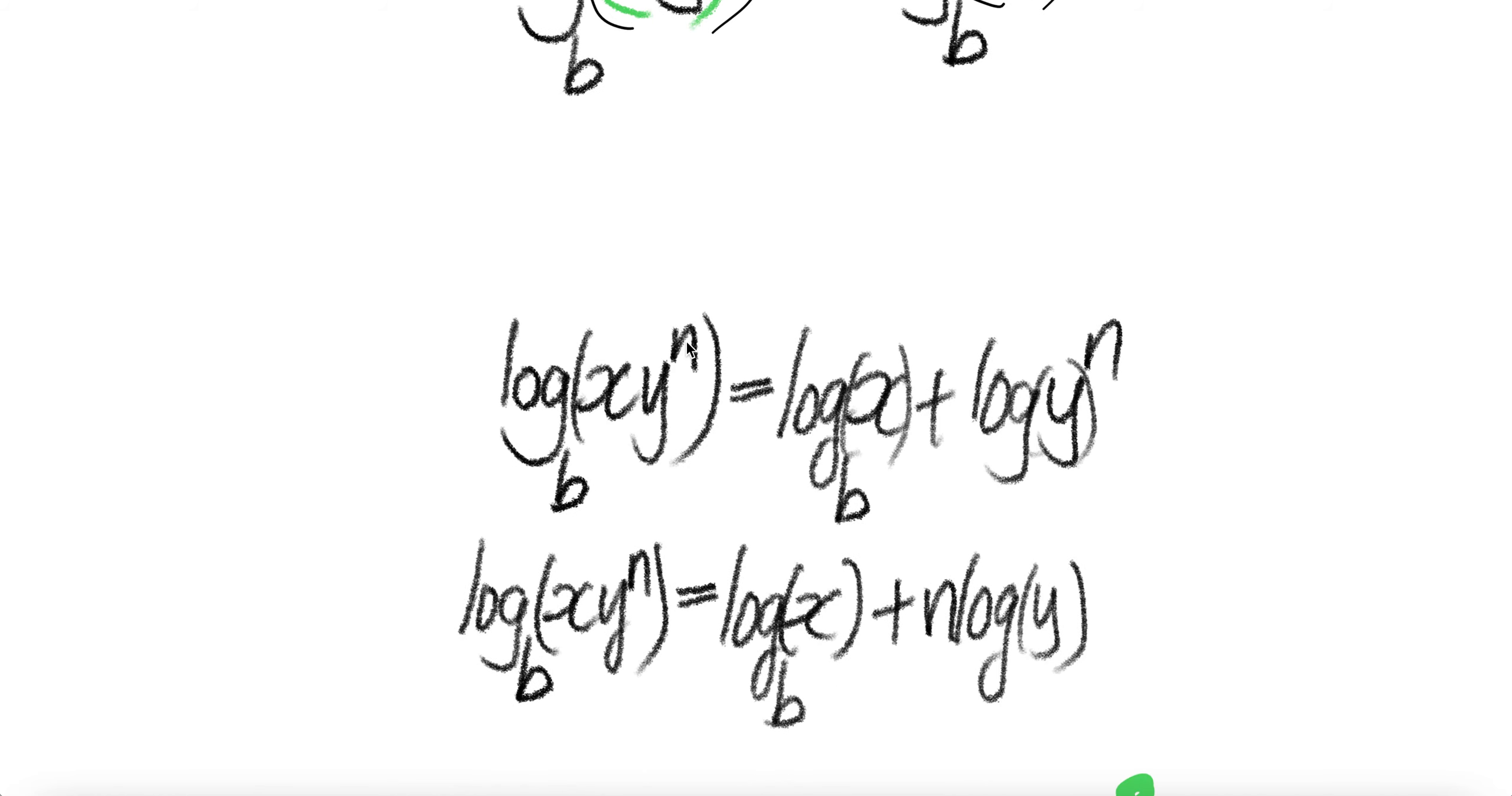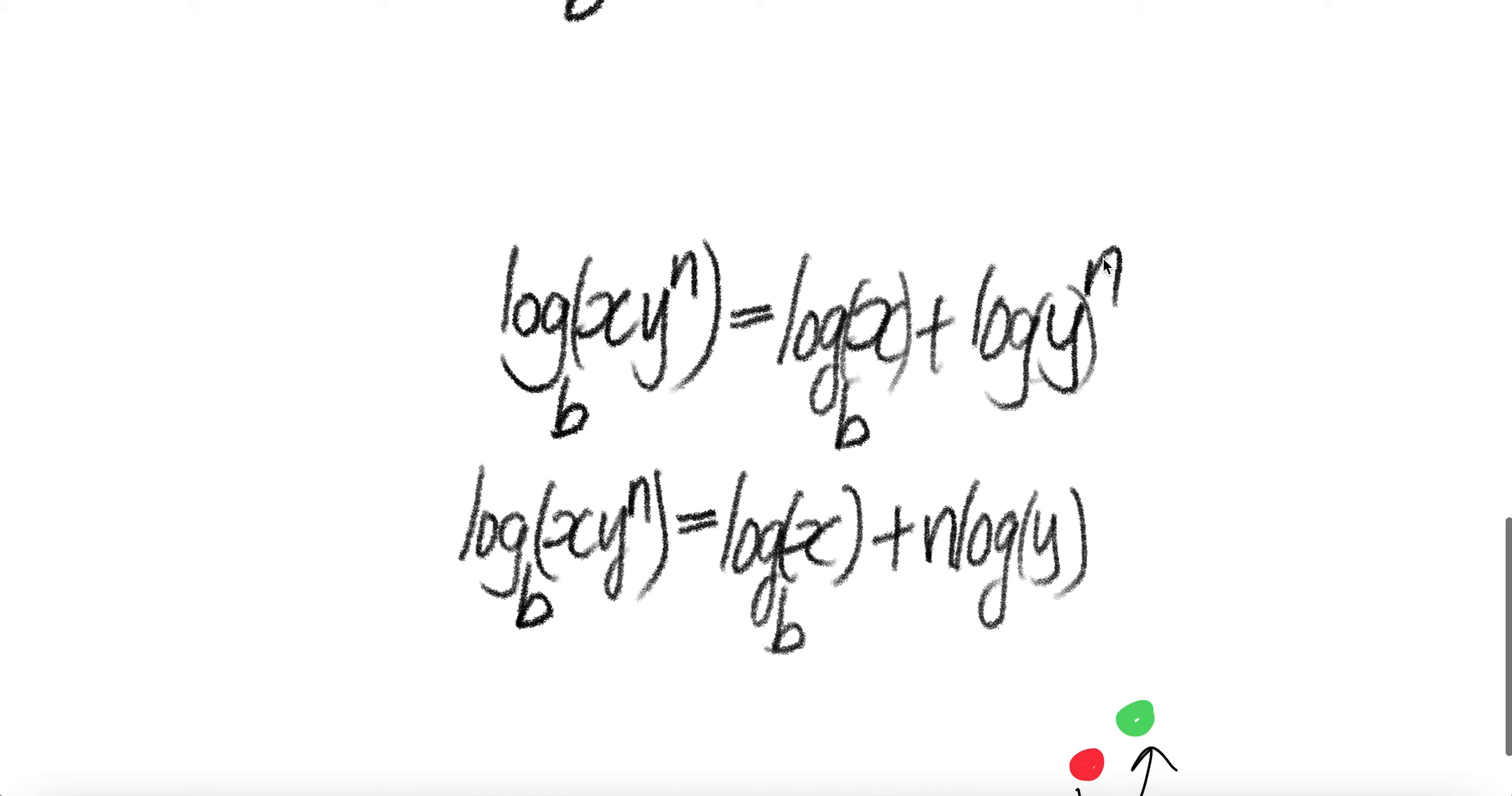If you want to do the bringing down of this exponent, log of x times y to the power n to the base B equals log of multiplication, which you can add. At this stage, yes, you can bring n down in front of the log. So it will be n log of y to the base B.